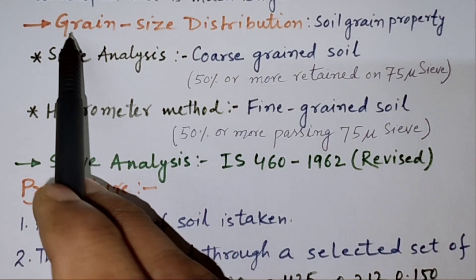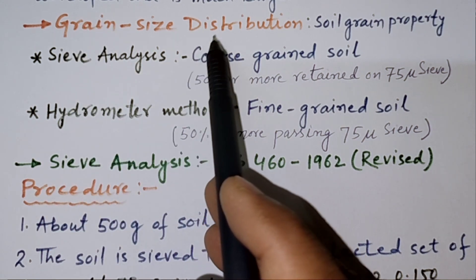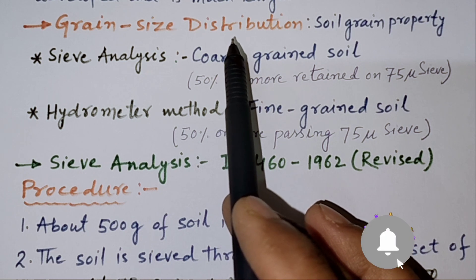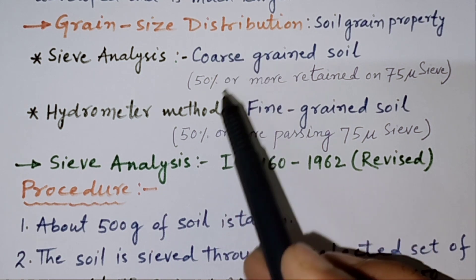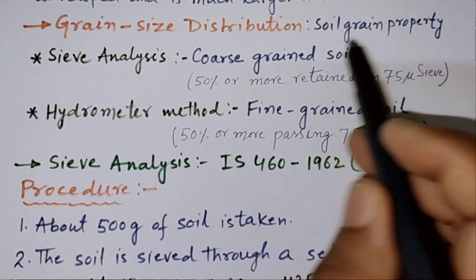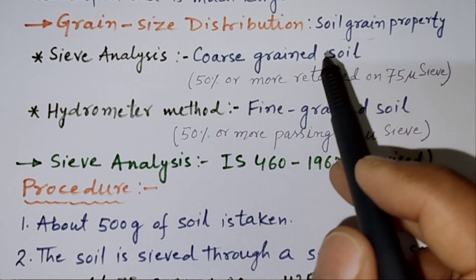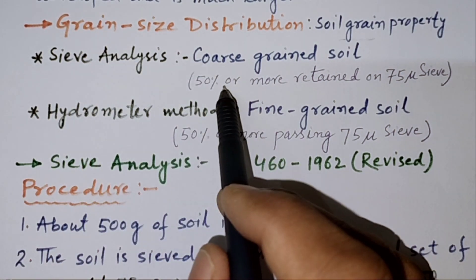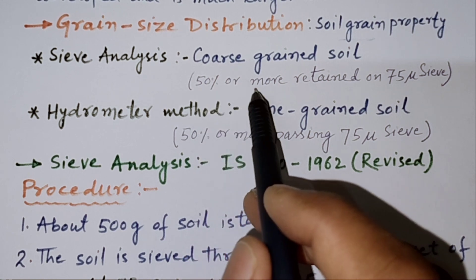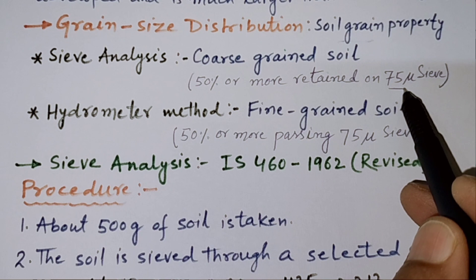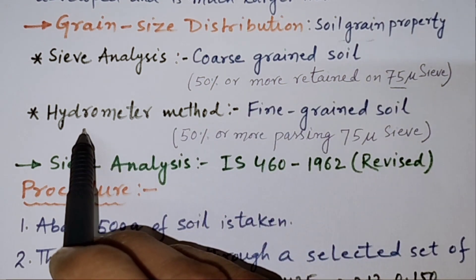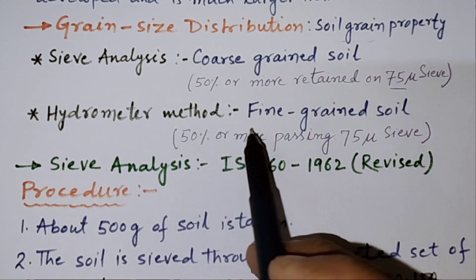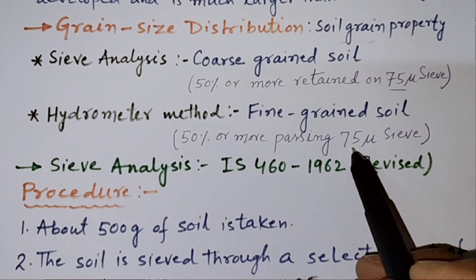Now, Grain Size Distribution. Grain Size Distribution is the percentage of various sizes of soil grain present in a given dry soil sample, an important soil grain property. If the soil is coarse, we will do sieve analysis. Coarse grain soil means 50% or more retained on 75 micron sieve. And if the soil is fine grained, we will do hydrometer method. Fine grained means 50% or more passing 75 micron sieve.